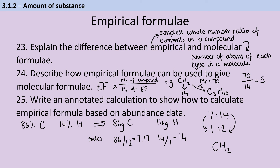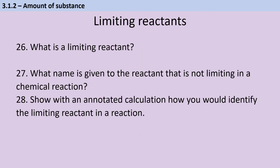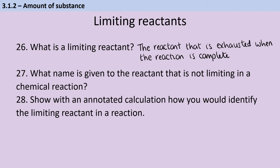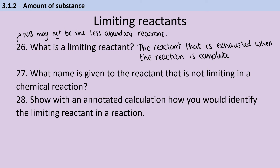Remember, if a question asks you to give an empirical formula, you have to give your answer in the form of a molecular formula — it can't just be left as a ratio of 1 to 2. The limiting reactant is the one that is completely exhausted when the reaction is complete. This isn't necessarily the less abundant reactant, because if the reactants don't react in a 1:1 ratio, you could have more moles of a reactant that still isn't enough to react with the other. The reactant that isn't limiting is called the excess.